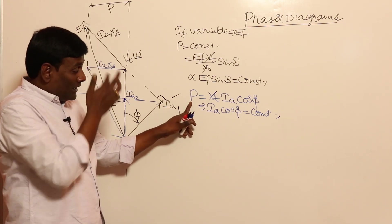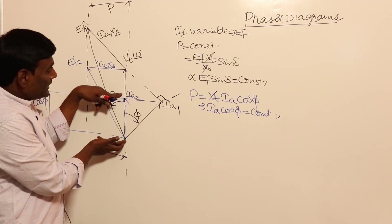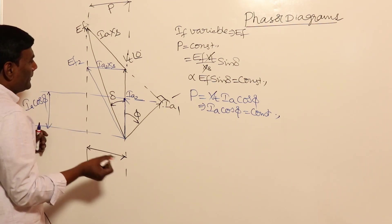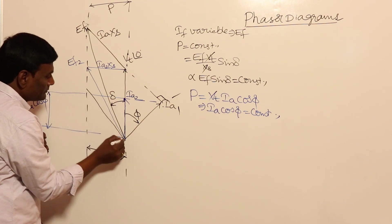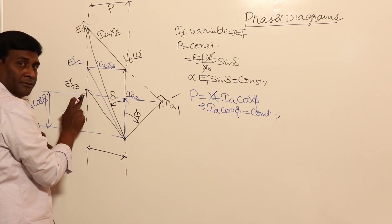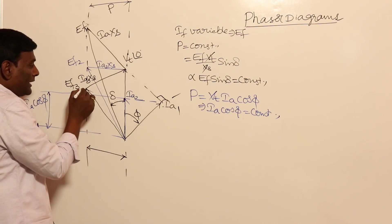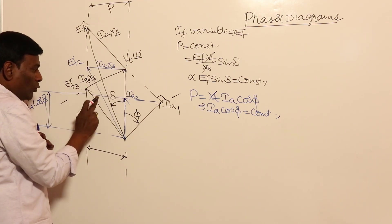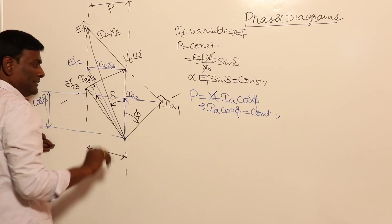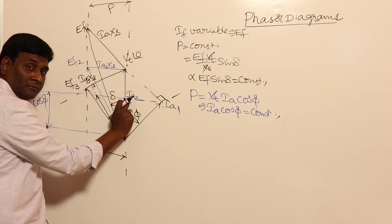Checking active power: Ia1 cos φ1 and Ia2 cos φ2 — where φ2 is unity — are the same, so active power is maintained. If EF is reduced further to EF3, Ia3 excess is found, and then Ia3 is drawn 90 degrees to Ia3 excess. Therefore, Ia1 cos φ1 = Ia2 cos φ2 = Ia3 cos φ3.